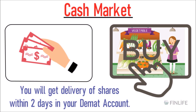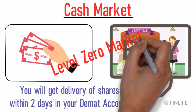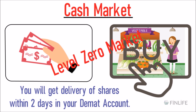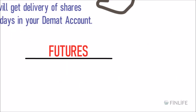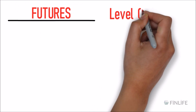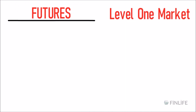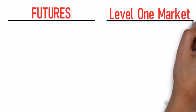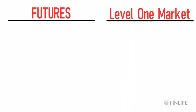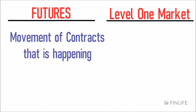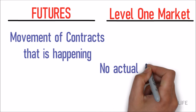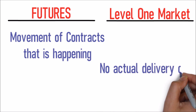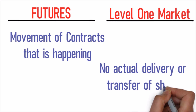Moving further to the futures market: cash market is Level 0 — just giving money and buying something. Level 1 is the futures market. The futures market simply involves movement of contracts, and there is no actual delivery or transfer of shares to one's account.